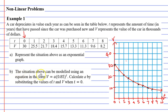Question B says that the situation above can be modelled using an equation in the form V equals A times 0.85 to the power of T. It wants us to calculate A by substituting the values of T and V when T equals 0. When does T equal 0? It equals 0 at this point — when T equals 0, V actually equals 30, as we can see from our table of values.